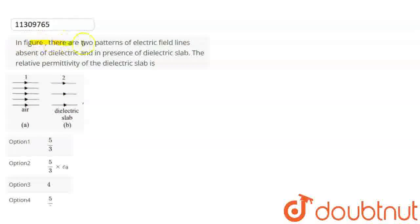In the figure, there are two patterns of electric field lines, absent of dielectric and in presence of dielectric slab. The relative permittivity of the dielectric slab is?